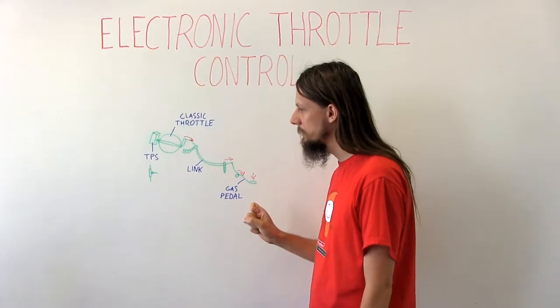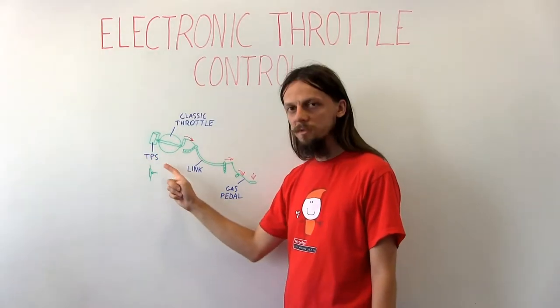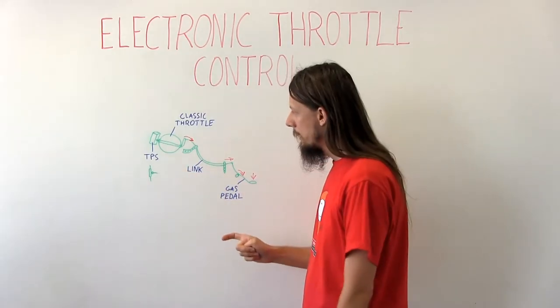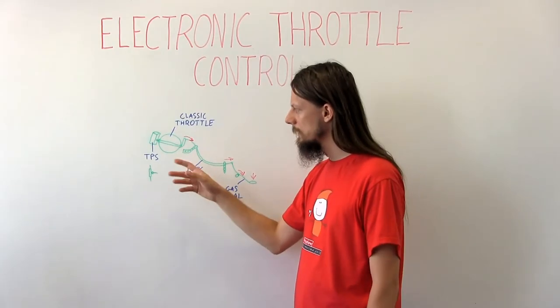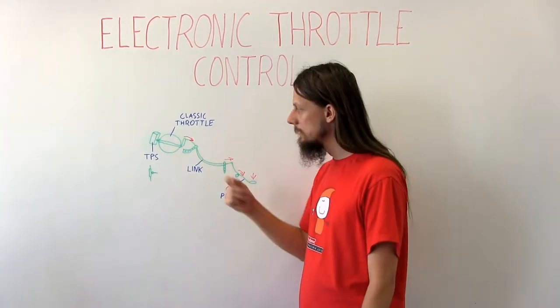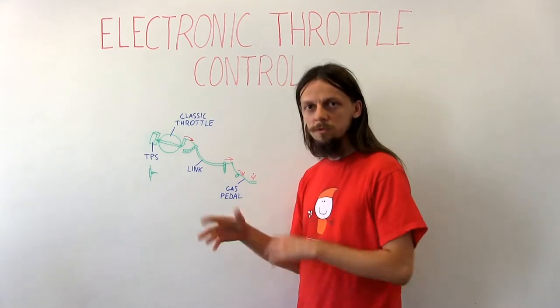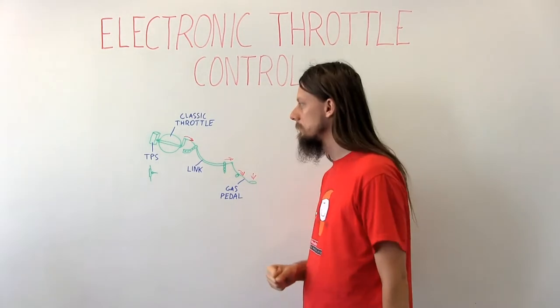One more piece of this puzzle is this TPS, meaning the throttle position sensor. It's nothing else than a potentiometer that changes its resistance depending on the position of the throttle. This is needed for the ECU to calculate the amount of fuel that is needed for this amount of air.